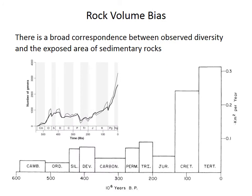Returning to the idea of rock volume bias: if more rocks of a given age are exposed, there are more opportunities for fossil collecting, and therefore probably more specimens collected. The correspondence between diversity curves — which show a big increase in the Cenozoic — and measures of rock exposure, shown here as a bar plot of square kilometers of outcrop divided by the duration of geological time intervals (giving km² per year), does raise concerns about this bias.